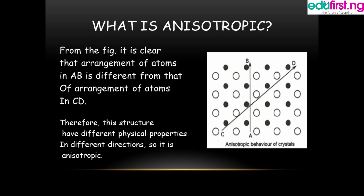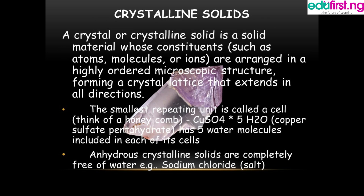A crystal or crystalline solid is a solid material whose constituents, such as atoms, molecules, or ions, are arranged in a highly ordered microscopic structure, forming a crystalline lattice that extends in all directions. A crystalline solid is one in which the molecules or atoms are arranged in highly ordered repeating patterns. Most solids are crystalline, and they appear in shapes or plates packed together.